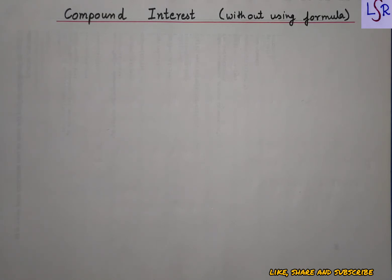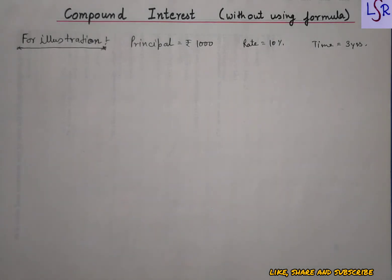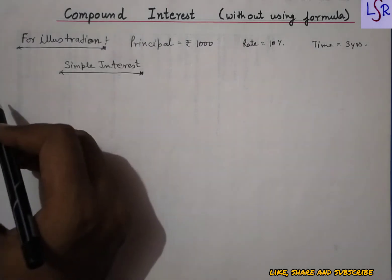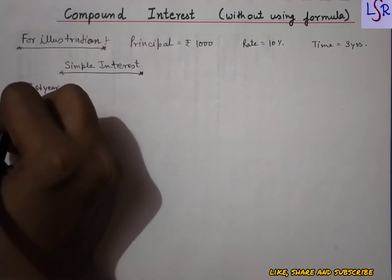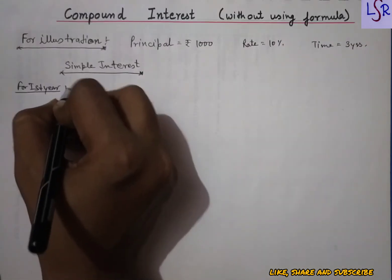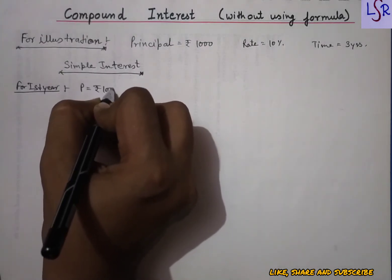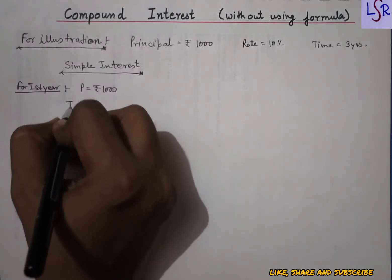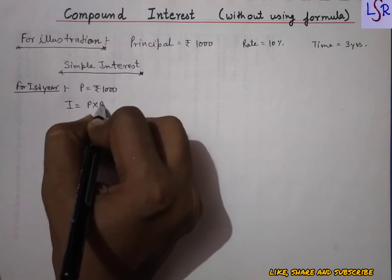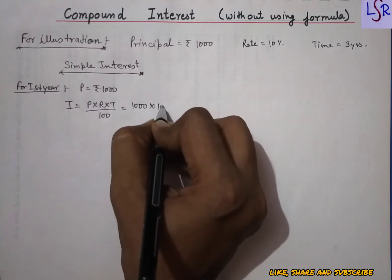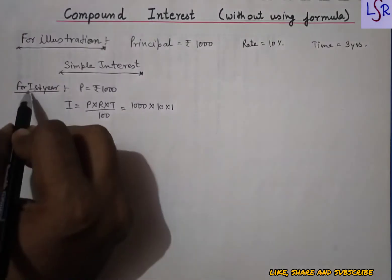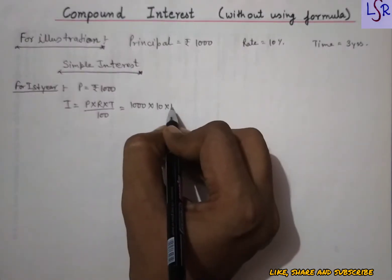For illustration, we have taken a case where the principal is 1000 rupees, the rate is 10 percent, and the time is three years. We are going to find the simple interest first and then the compound interest. In the case of simple interest, for the first year the principal will be rupees 1000, and we are going to find the interest on it. Interest equals P into R into T divided by 100, that is 1000 into 10 into 1 — because this interest is for the first year, so time is 1.